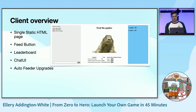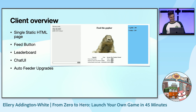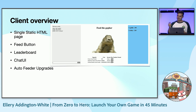The client overview — I'm not a UI developer so it's pretty basic, and ChatGPT helped me with a bit of it. It's a single page static HTML page. We're going to have a feed button, which is actually a picture of the gopher — when you click on the gopher you manually feed them. It's going to include a leaderboard on the right, a chat UI on the left, and some auto feeder upgrades you can buy at the bottom.